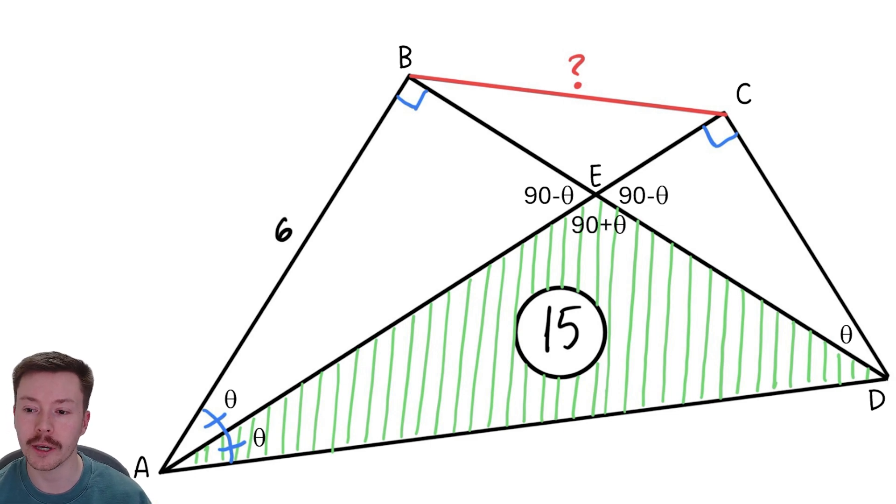Now from there I can work out that this angle at E, AED, is 90 plus theta, because angles on a straight line add up to 180. And I can then, by subtracting 90 plus theta and theta from 180 degrees, I can get that this angle EDA is 90 minus 2 theta.